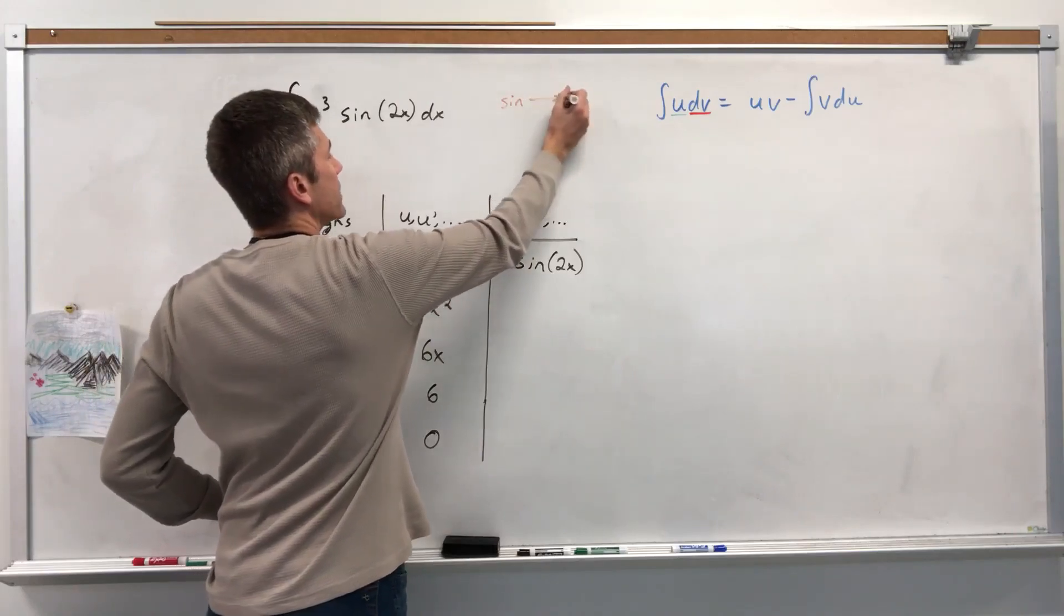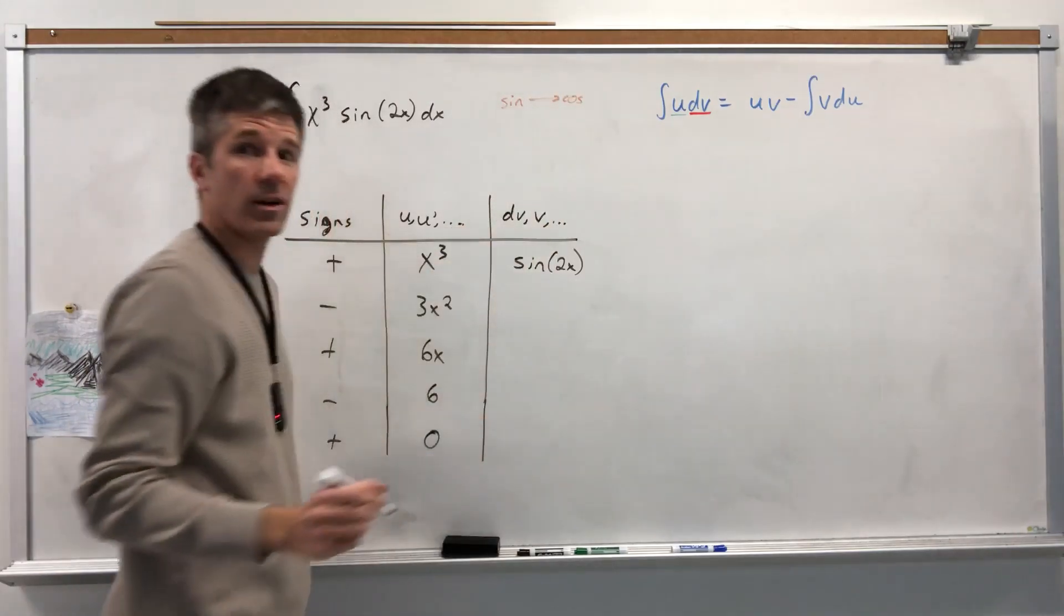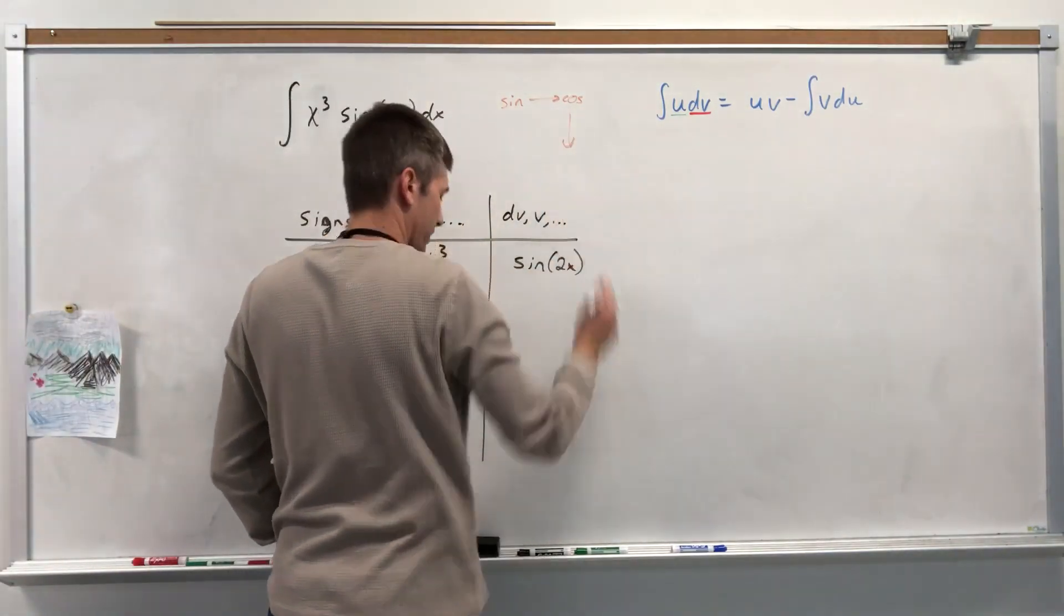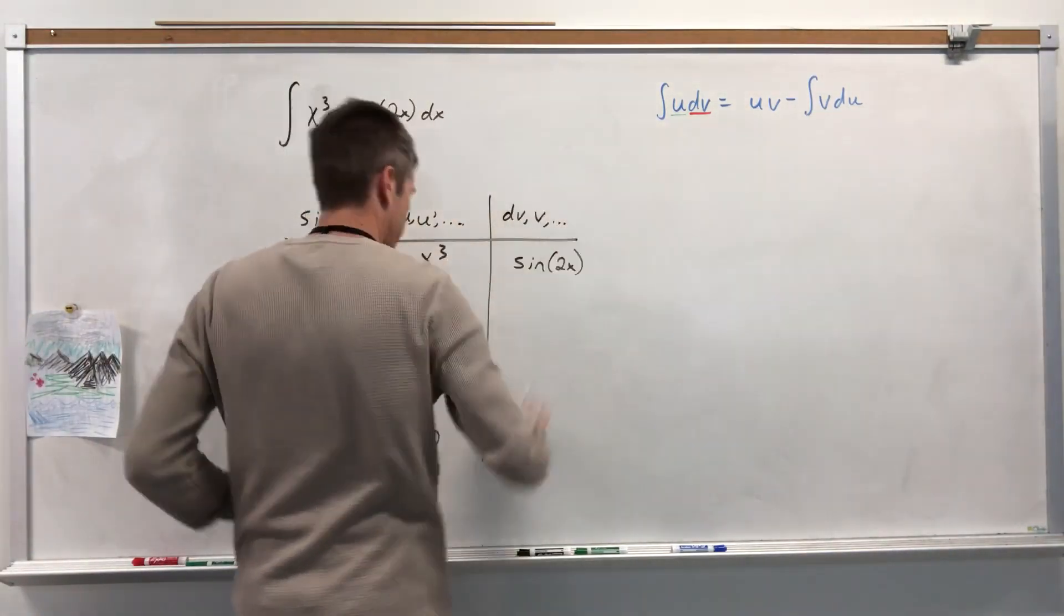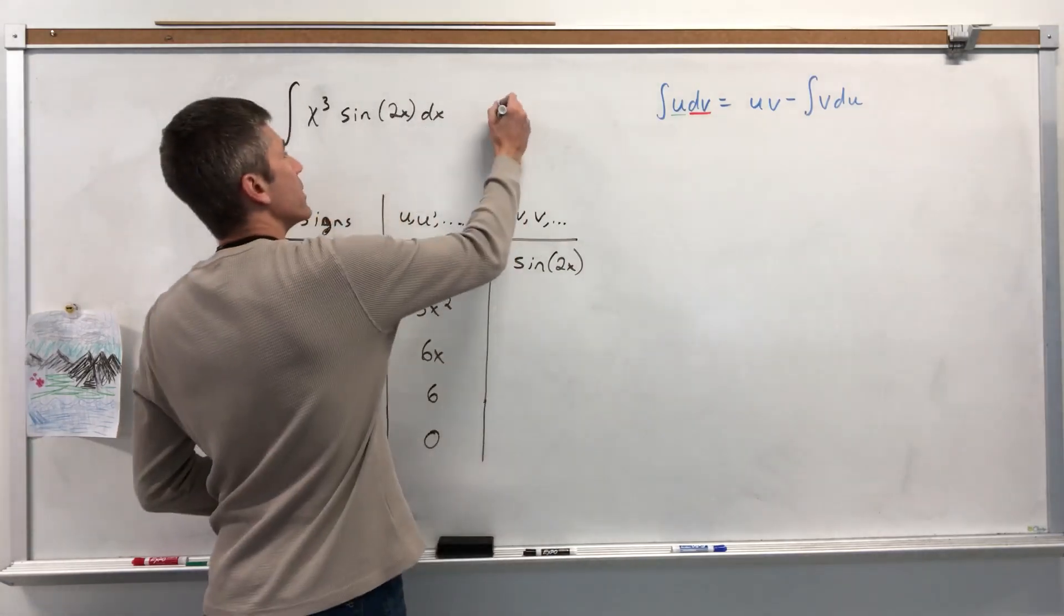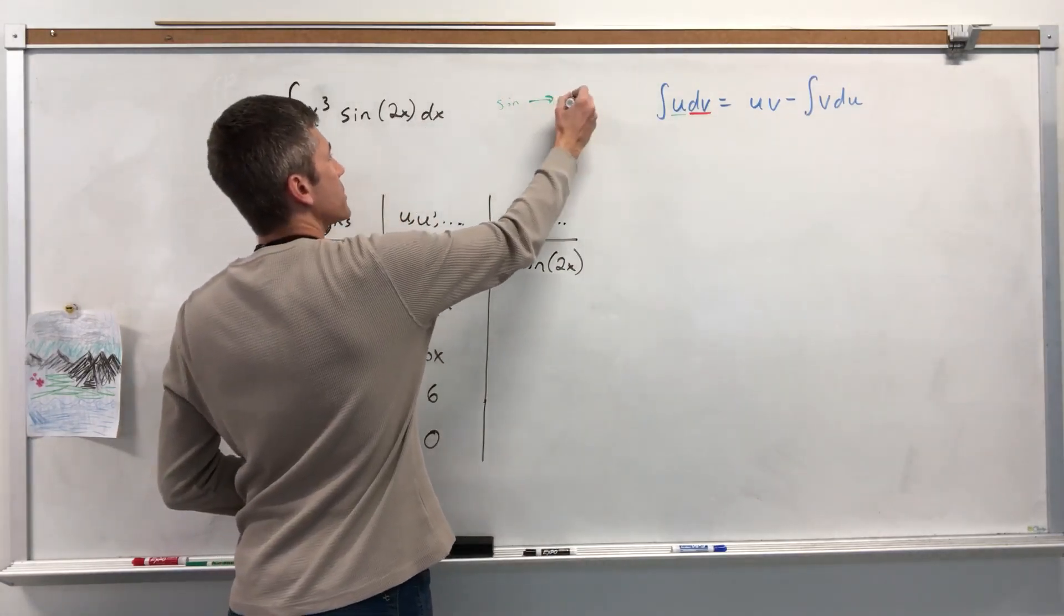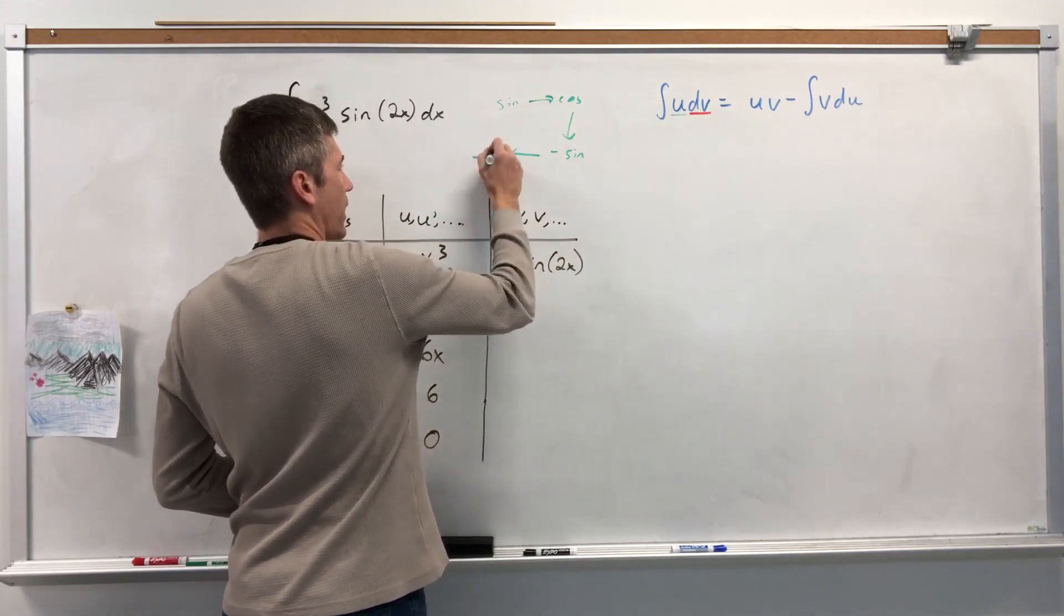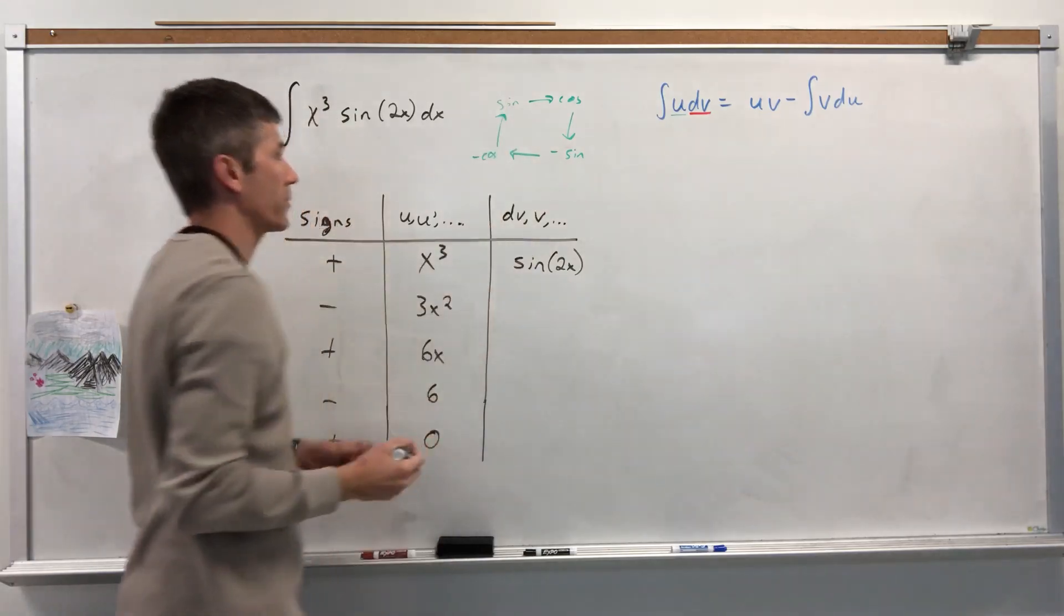The derivative of sine is cosine. Is that showing up very well? Nope. I don't like this marker. It doesn't show up very well. Let's use green. The derivative of sine is cosine. The derivative of cosine is negative sine. I'm doing this just so I can point and go fast on this. And there we go. Back to there.